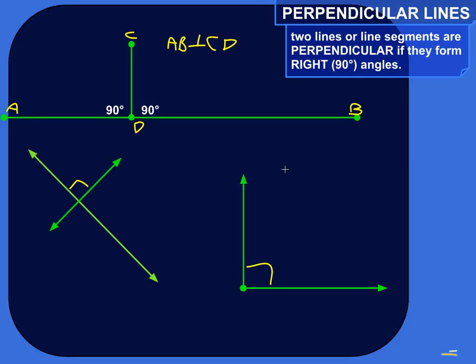Hey there. So perpendicular lines. Two lines or line segments are perpendicular if when they touch or cross each other they form right angles, 90 degree angles.